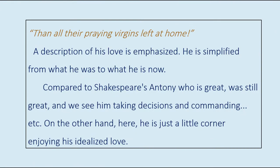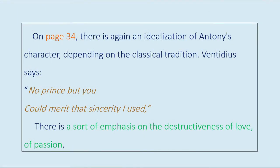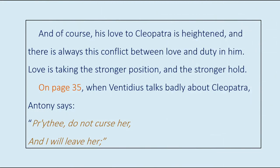He is simplified from what he was to what he is now. Compared to Shakespeare's Antony who was great, still great, and we see him taking decisions and commanding — here, on the other hand, he is just in a little corner enjoying his idealized love. On page 34, there is again an idealization of Antony's character depending on the classical tradition. Ventidius says: 'No prince but you could merit that sincerity I used.' There is a sort of emphasis on the destructiveness of love and of passion, and of course his love to Cleopatra is heightened, with always this conflict between love and duty in him — love taking the stronger position.